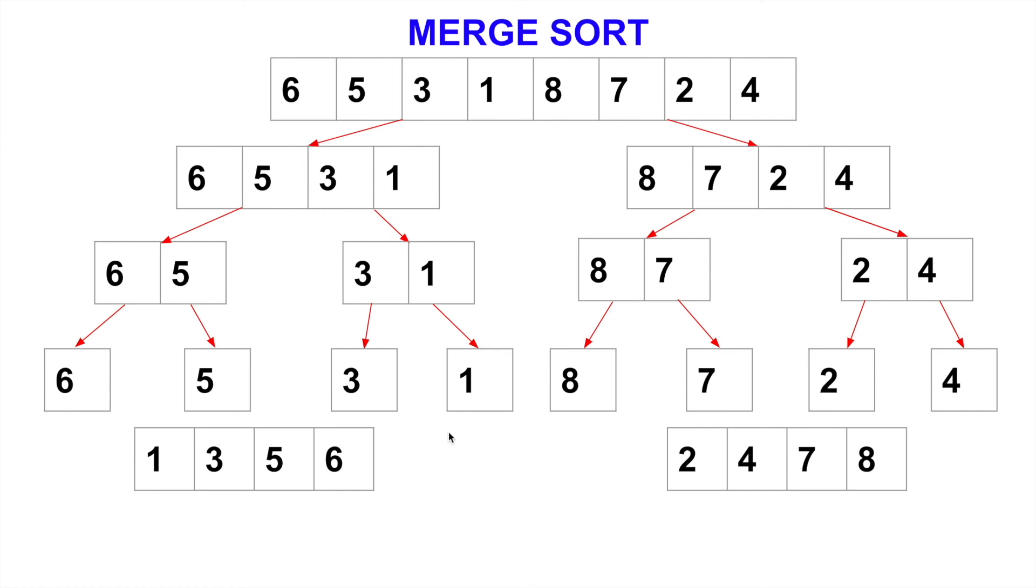So what we'll do is 1. 1 comes down here. Now next one is 2. 2 is smaller than 3. 2 comes down. Next one is 3. Then 4. Compare 5 and 7. Which one is smaller? 5. So 6 and 7. Which one is smaller? 6.